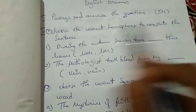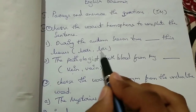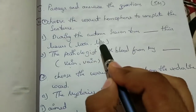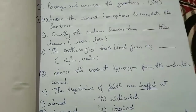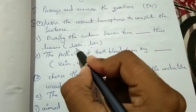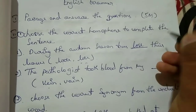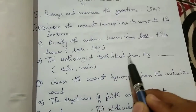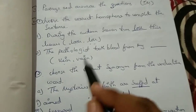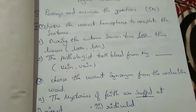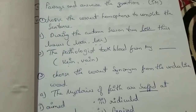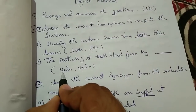Choose the correct homophone to complete the sentence. Here we have to choose the correct word. Our English should be good — if it is, this is very easy. For example: 'During the autumn season, trees dash their leaves' — they lose their leaves, so the answer is 'lose.' Next: 'The pathologist took blood from mine' — the answer is 'vein,' which is a part of the body. So this is the correct answer.